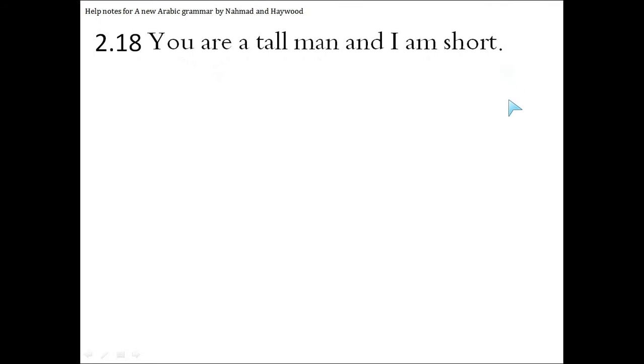So first step is to analyze the sentence. We can see that there are two instances of the verb 'to be': 'you are' or what could have been 'you is a tall man' - 'you are a tall man' in English, and the verb becomes 'am' when it's with 'I' - 'I am short'.